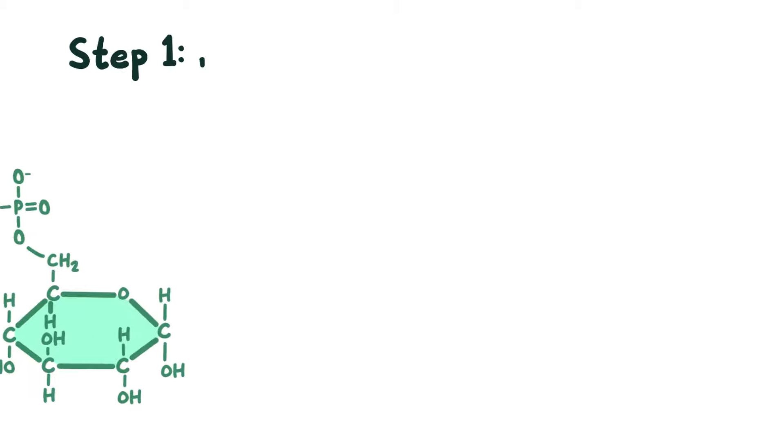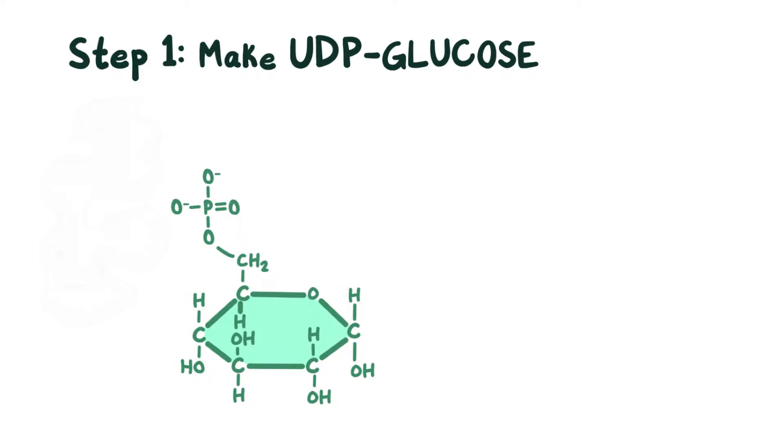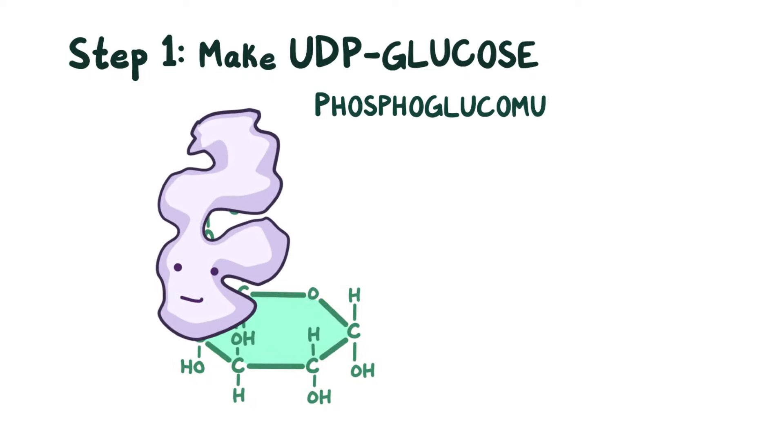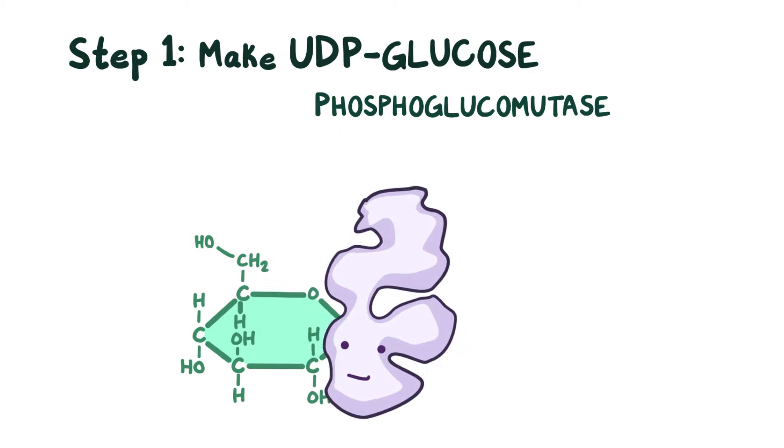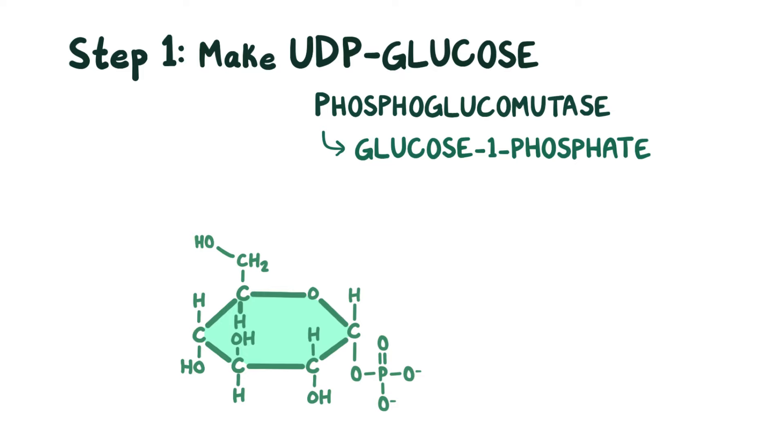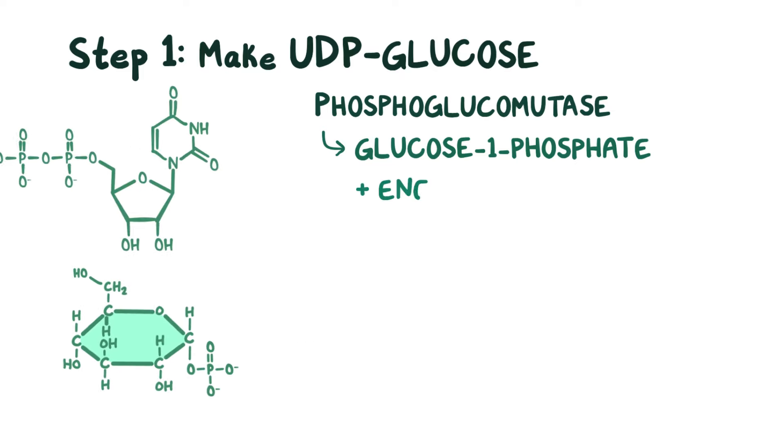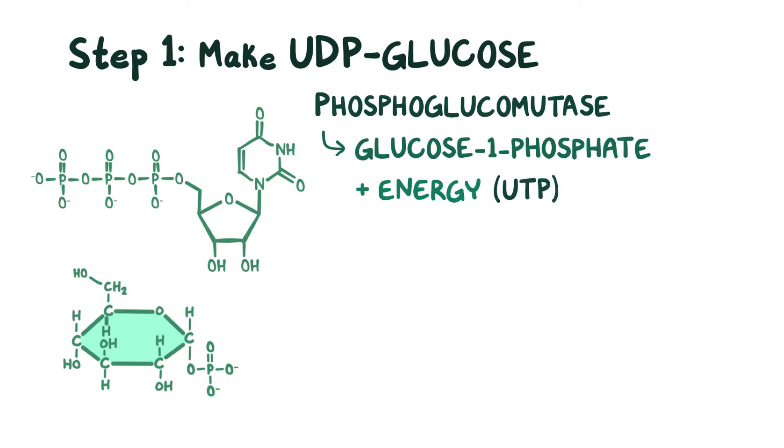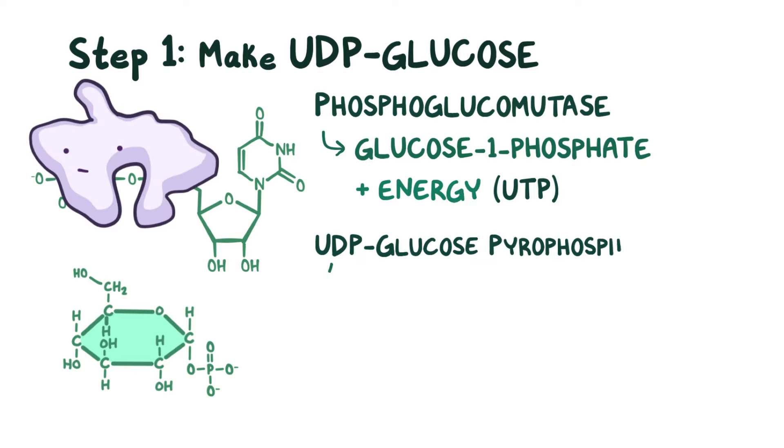So starting with step one, to make UDP glucose, an enzyme called phosphoglucomutase moves the phosphate from the sixth carbon of glucose 6-phosphate to the first carbon, creating glucose 1-phosphate, which uniquely comes in the form of uridine triphosphate, or UTP. In the presence of glucose 1-phosphate and UTP, an enzyme called UDP glucose pyrophosphorylase cuts two phosphate molecules off of UTP, which give the energy necessary to complete this reaction.